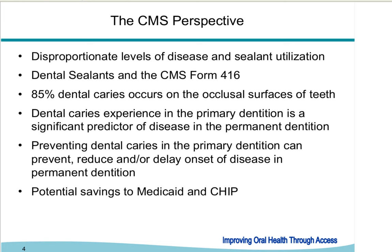Preventing caries in the primary dentition can prevent, reduce, or delay onset of disease in permanent dentition. What we're hearing more about is chronic disease management. This has been compared to patients with diabetes — a physician doesn't wait until a foot is amputated or the patient goes blind; the disease is treated as chronic, not waiting for the end result. Similarly, the analogy would be the tooth that now has a hole, requiring surgical restoration. Chronic disease management has existed in dentistry for decades, but we've lacked payment innovations to move it forward.